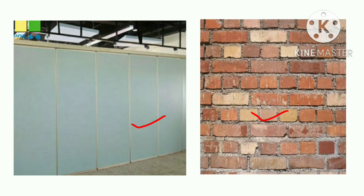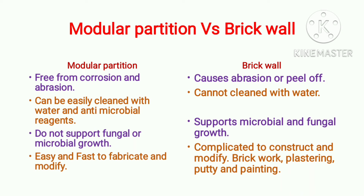Now we'll see the reasons behind using modular partition instead of brick walls. Looking at this comparison table: first, modular partition is free from corrosion and abrasion, whereas brick walls cause peel-off and abrasion due to moisture. Due to peel-off and abrasion there is promotion of microbial growth on brick walls. This is the main drawback of brick walls, while modular partition is free from peel-off, corrosion, and abrasion.